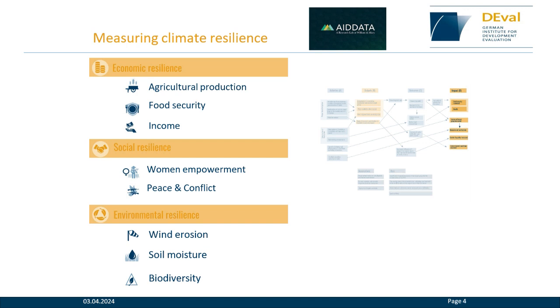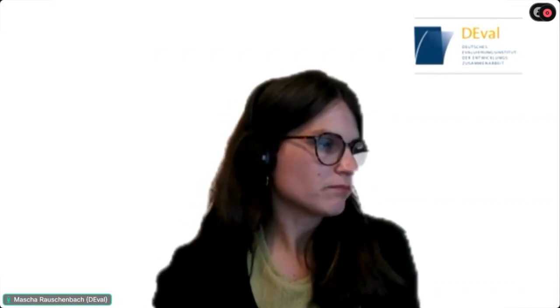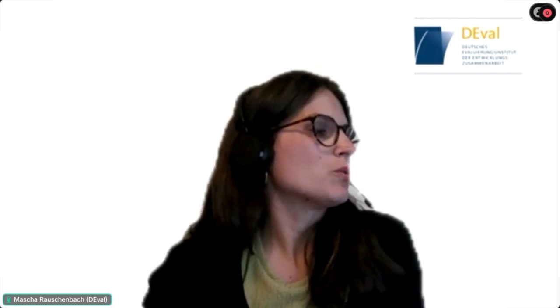Once we sketched this theory of change, we devised proxies for different dimensions of resilience to measure effects at the impact level. We had a three-dimensional understanding of resilience: economic resilience, measured through agricultural production, food security, and income; social resilience, where we studied effects on women's empowerment and conflict intensity; and lastly, environmental resilience, where we looked at wind erosion, soil moisture, and biodiversity.